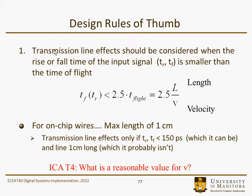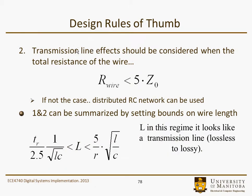There are some design rules of thumb, some of which we saw already. Transmission line effects should be considered when the rise or fall time is smaller than the time of flight — that's the first rule of thumb. For example, for an on-chip wire with a maximum length of one centimeter, the transmission line effect would apply if t_rise and t_fall were less than 150 picoseconds. A second rule of thumb: transmission line effects should be considered when the total resistance of the wire is less than 5·Z₀. If that's not the case, a distributed RC network can probably be used instead.